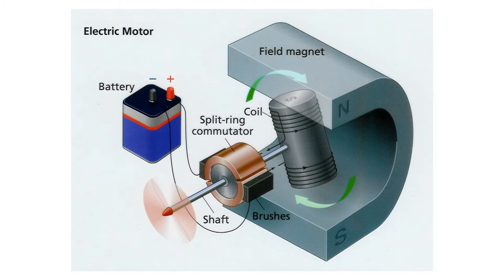If current is run through a coil of wires, an electromagnet is created. If you put it inside of another real magnet, the north pole of the electromagnet will be attracted to the south pole of the real magnet and repelled by the north pole of the real magnet. Just the opposite for the south pole of the electromagnet.